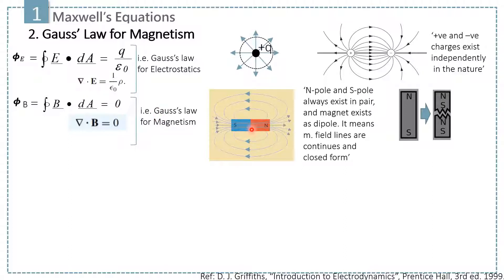Suppose we have a magnet having a north pole and a south pole. Magnetic field lines are coming in at the south pole and leaving at the north pole, and you can see the magnetic field lines are in closed-loop and continuous form. This means that the basics for magnetism is the magnetic dipole, rather than magnetic charges.